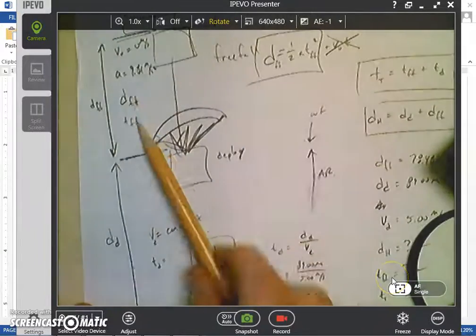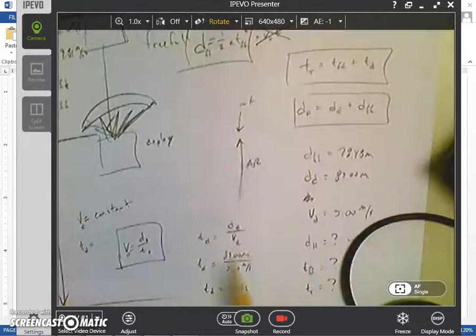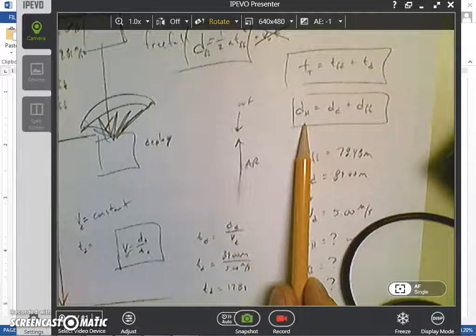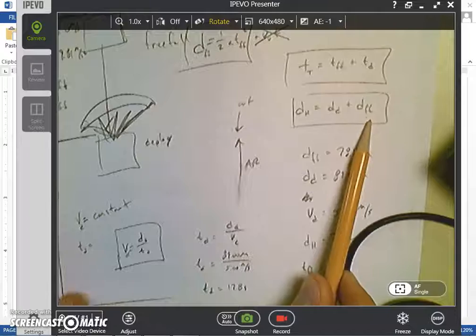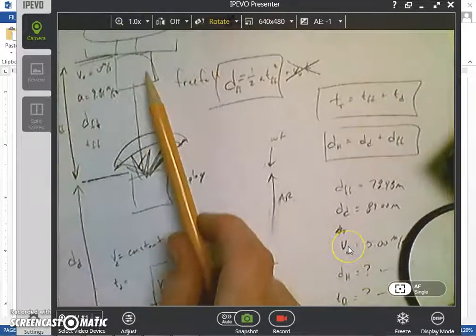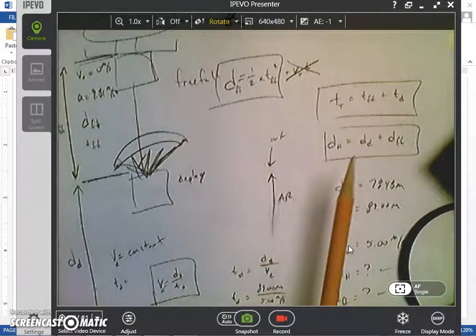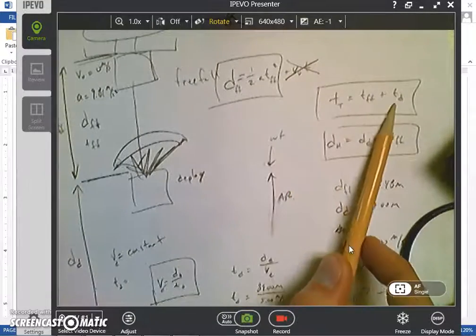And then we can relate these two distances together to the total height, which is the height of the helicopter. So the distance to the helicopter is the deployment distance plus the freefall distance. And then also the times. The total time it takes to drop would be the time of freefall plus the time of deployment.